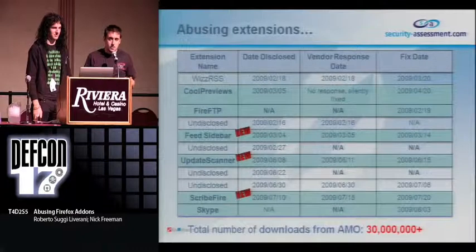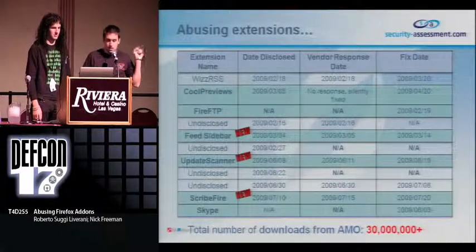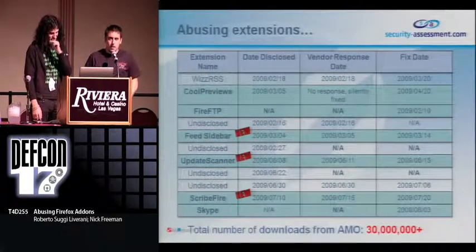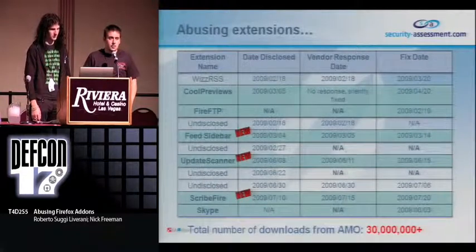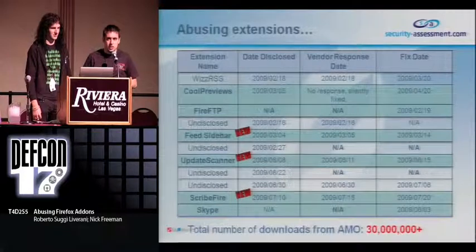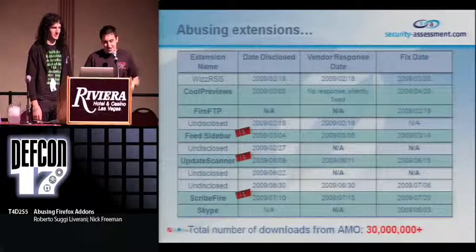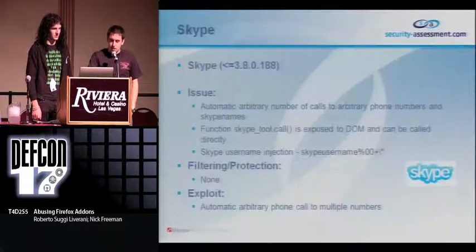We can't disclose everything because we follow responsible disclosure and we're waiting for some extensions to fix their bugs. But we're going to show you six vulnerable extensions, three of which haven't been disclosed before. If we sum all the downloads for all the extensions we found, that's more than 30 million. Let's start with Skype, which is one extension — when you install Skype you get five extensions you can choose to install.